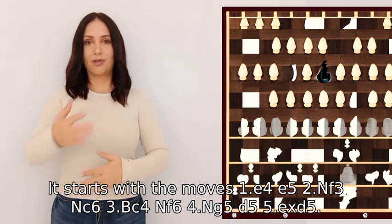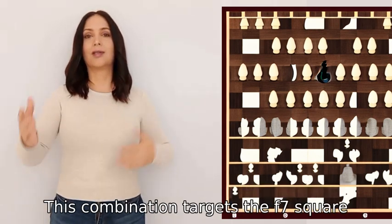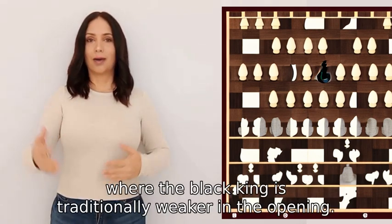This combination targets the f7 square, where the black king is traditionally weaker in the opening.